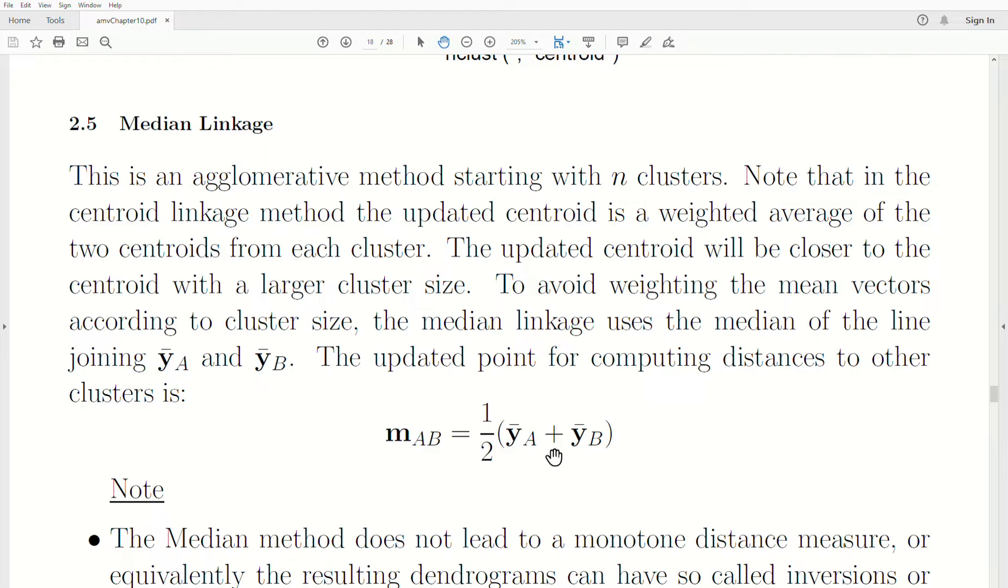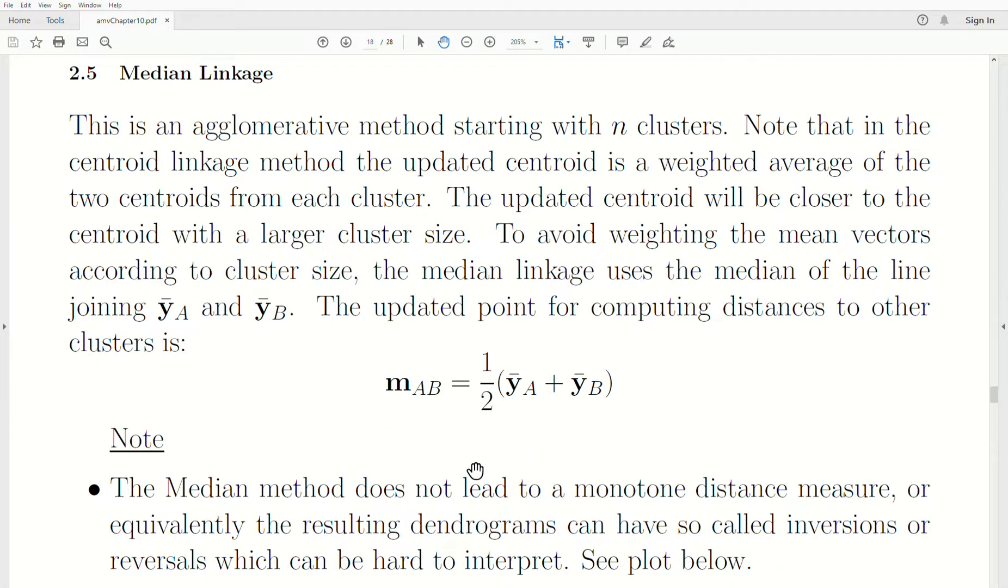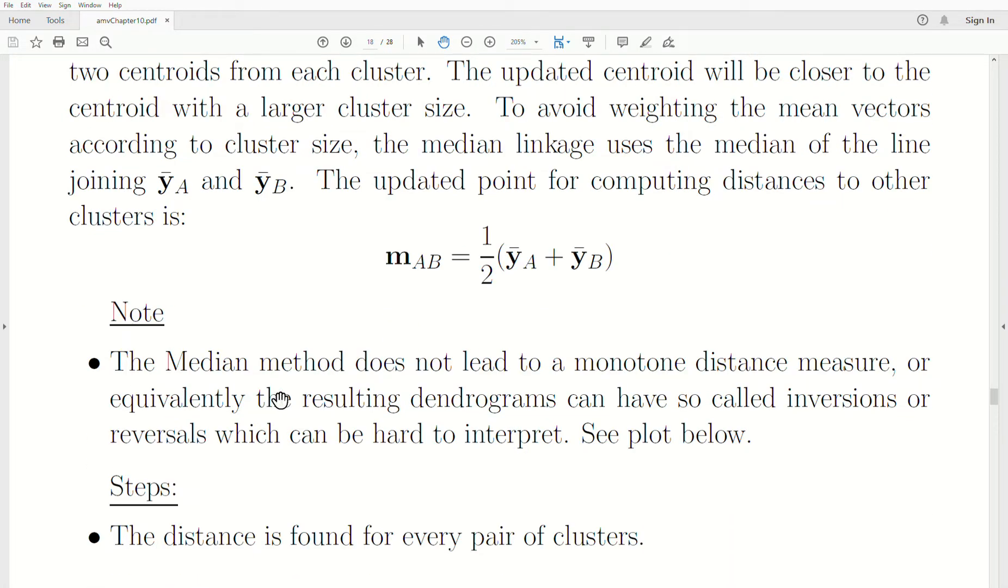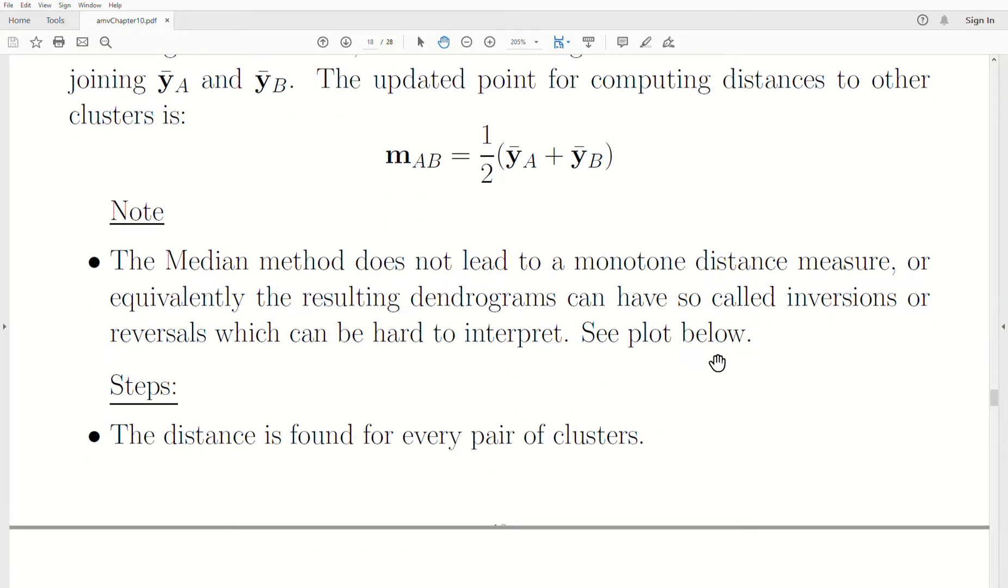So we're thinking about finding the distance between clusters A and B to be the smallest, so now we need to join them. But to join them, we just pick that middle point between them. And then that's the new point for the cluster AB. And then that new point, the median, is what we'll use to compare with the distance of all the other clusters. And again, a note: the median does not lead to a monotone distance measure. So you're going to get these inversions in the dendrogram. And I'll point it out in the plot below.